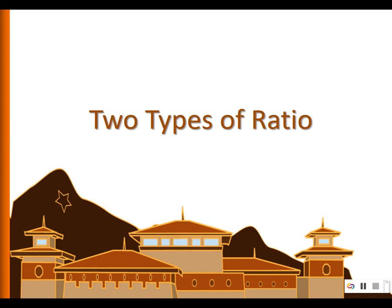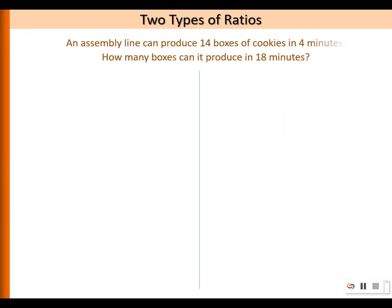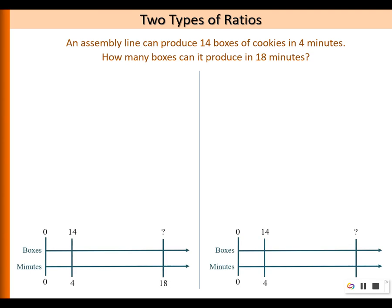In this video, we will compare and contrast two types of ratio. We will begin by considering a word problem: an assembly line can produce 14 boxes of cookies in 4 minutes. How many boxes can it produce in 18 minutes? This word problem can be represented using a double number line, and we are going to use ratios to solve this problem.